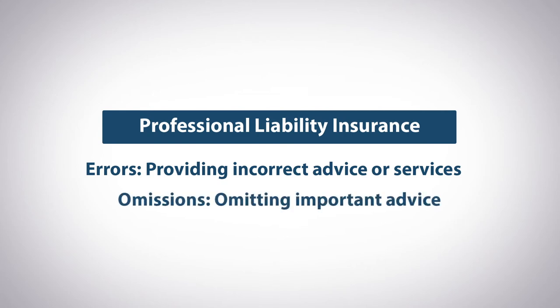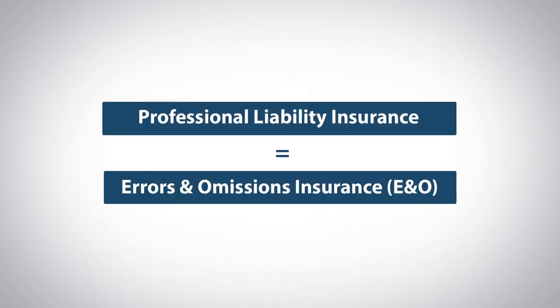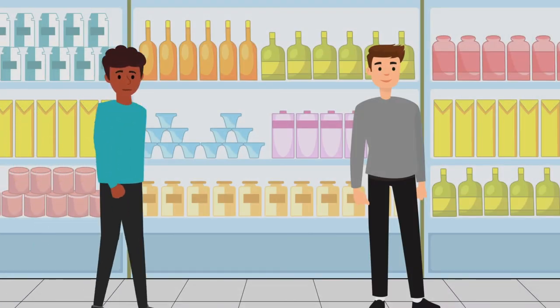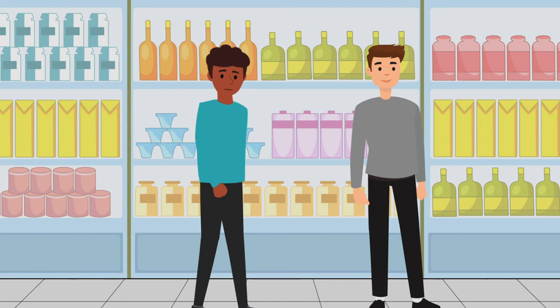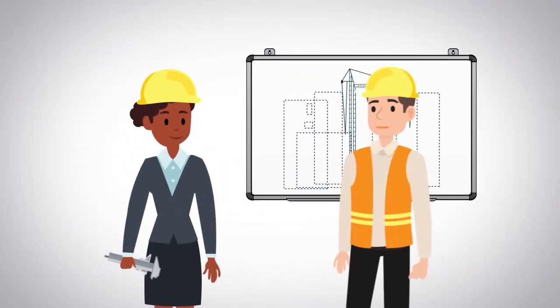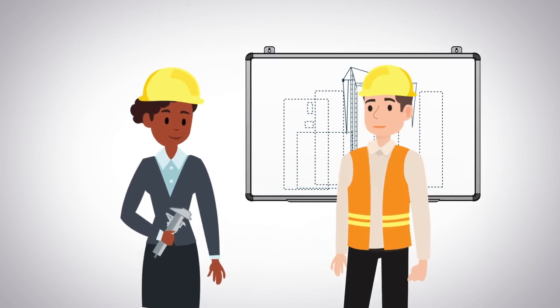For that reason, professional liability is often called errors and omissions insurance, or E&O. Virtually every company has general liability risks, like visitors' slip-and-fall accidents at their business location. Professional liability insurance is typically needed by service companies.